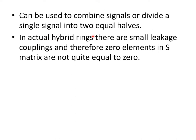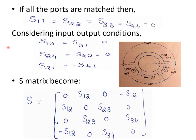There may be small leakage couplings, therefore the zero elements in the S-matrix are not quite equal to zero, even though we assume some elements to be zero for easier solving. They are not practically equal to zero since there will always be coupling leakage associated with the ring. To derive the S-matrix, we try to minimize the number of elements and then apply the unitary property to find the elemental values.